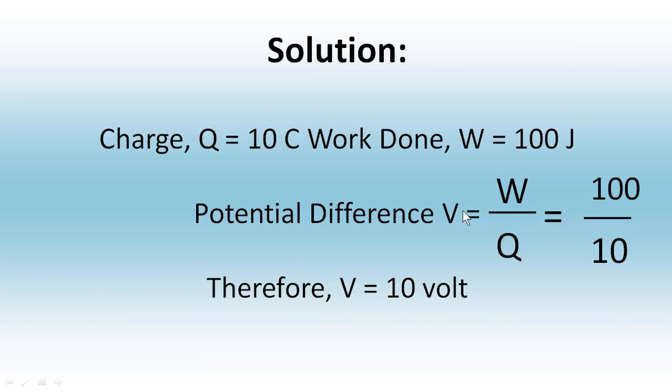What is given for W? This is 100, and for Q it is 10. Then you have to cancel these two zeros accordingly. Then you will get V is equal to 10 volt. V is equal to 10 volt is the answer for this question.